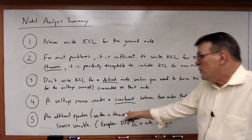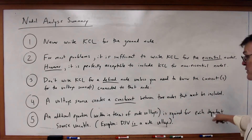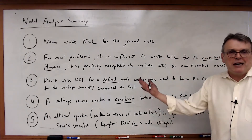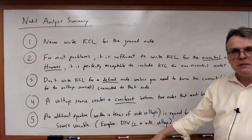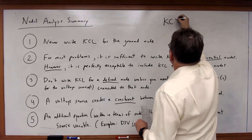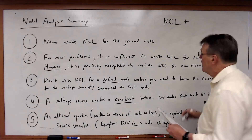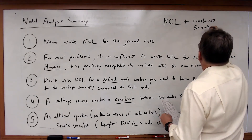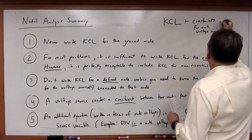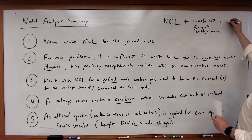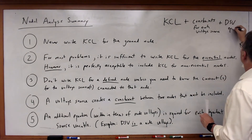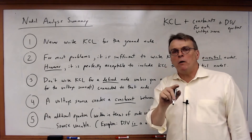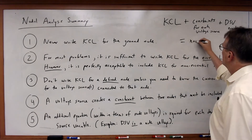And finally, an additional equation written in terms of the node voltages is required for each dependent source variable. The only exception is if the dependent source variable actually is a node voltage already, in which case it's redundant to write it. What you need to keep in mind is: KCL for each undefined node, plus your constraints for each voltage source, plus any dependent source variable equations. Add those together and the number of equations will equal the number of variables, giving you your nodal analysis solution.